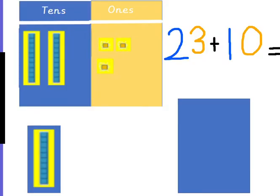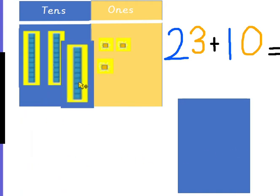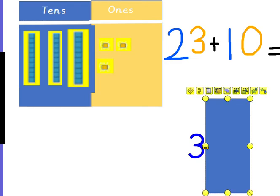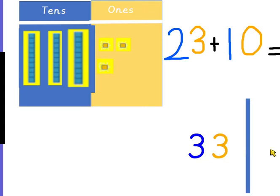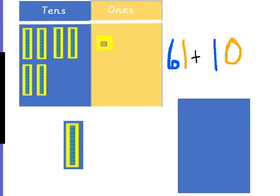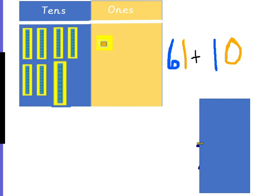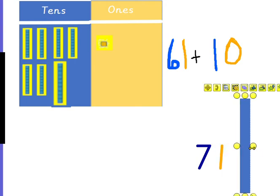What would 23 add 10 be? Which number is going to change — the 10's number or the 1's number? We've got 23 at the moment. If I add 10, I've got 1, 2, 3 tens now. And we didn't add any 1's — we've still got 1, 2, 3 ones. So 23 add 10 is 33. What about 61 add 10? I won't have 6 tens anymore. I've got 1, 2, 3, 4, 5, 6, 7 tens. And I've still got 1 one. So 61 add 10 is 71.